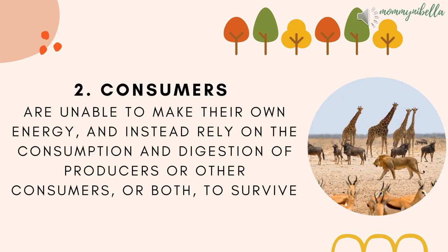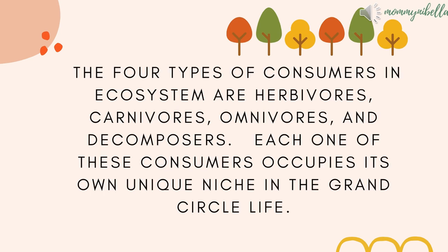The next one: consumers. Consumers are unable to make their own food. They entirely rely on the consumption and digestion of producers or other consumers, or both, to survive. The four types of consumers in an ecosystem are herbivores, carnivores, omnivores, and decomposers. Each one of these consumers occupies its own unique niche in the grand circle of life.